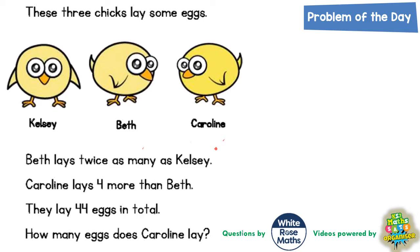Welcome problem solving fans to another problem of the day. This one is all about three chicks: Kelsey, Beth and Caroline. It says these three chicks lay some eggs. Beth lays twice as many as Kelsey. If we make Kelsey stand for K, Beth would be twice as many, so twice as many would be K plus K — in other words two lots of K.